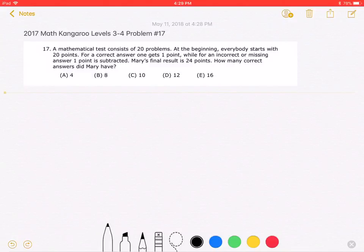Mary's final result is 24 points. How many correct answers did Mary have? A: 4, B: 8, C: 10, D: 12, or E: 16.